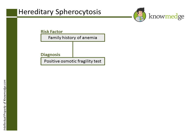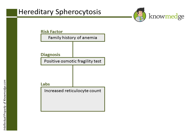Since it is a hemolytic anemia, we would expect to see an increased reticulocyte count, increased LDH, and increased indirect bilirubin. Furthermore, if we checked a haptoglobin level, it would be decreased, like other hemolytic processes.